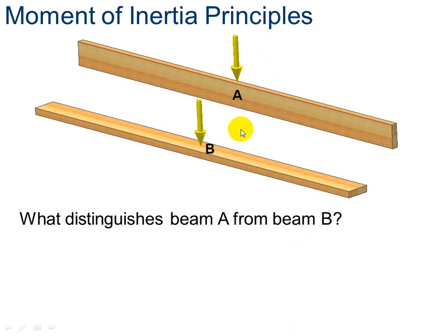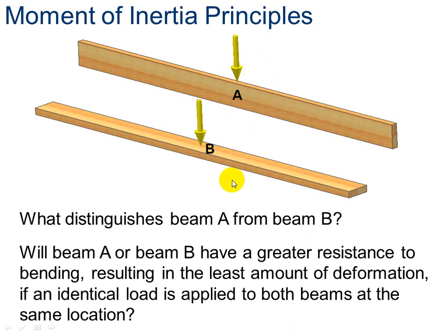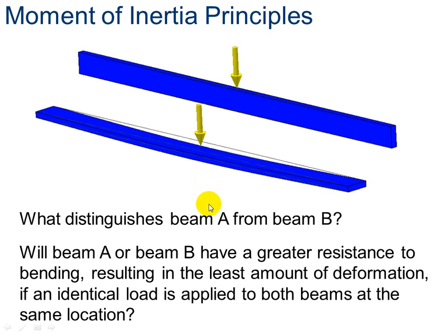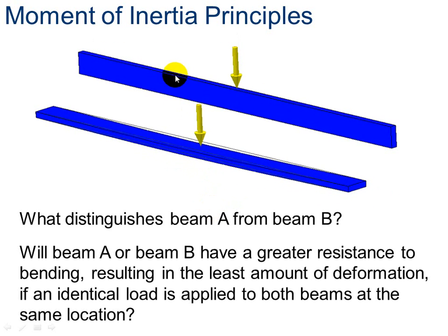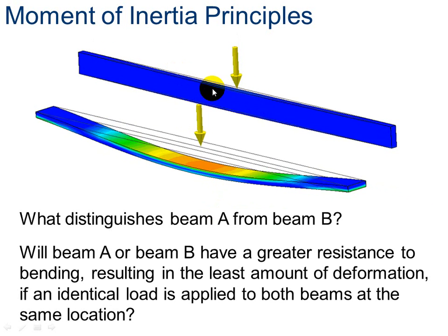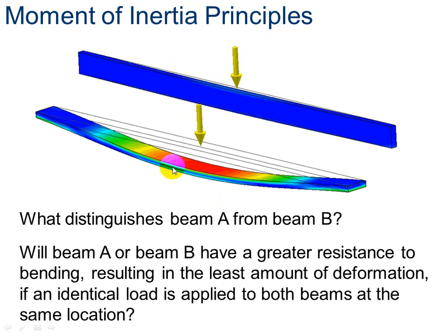So what distinguishes, what's the difference between A and B? It's the orientation. The boards are exactly the same size, only one is turned up on its side and one is laying flat. What do you think? Will beam A or beam B have a greater resistance to bending, resulting in the least amount of deformation, which is going to make us have a higher moment of inertia? And that's considering that we apply the same load to both beams at the exact same time. So because of the orientation, this joist has a greater moment of inertia. This joist is nine times as stiff as the plank in this example.